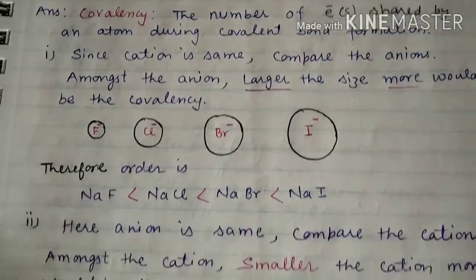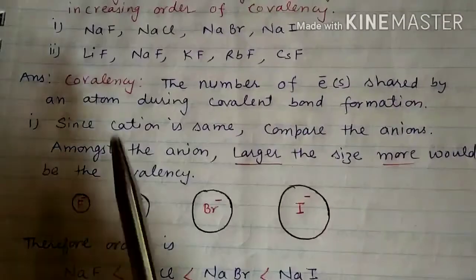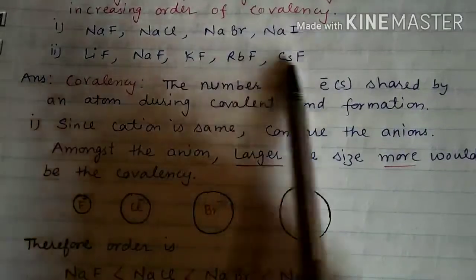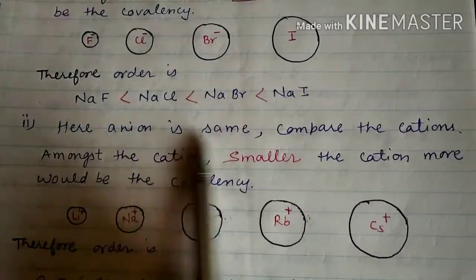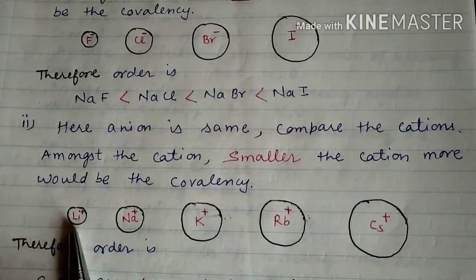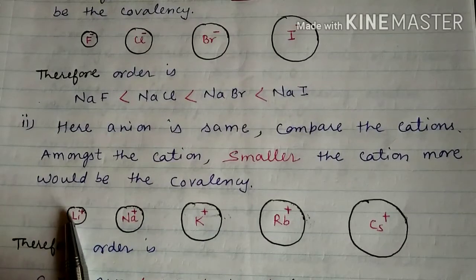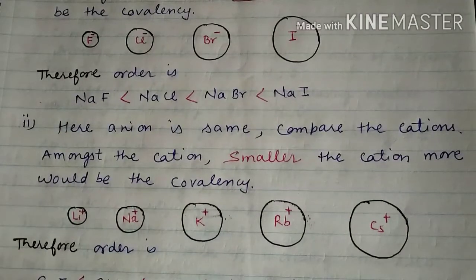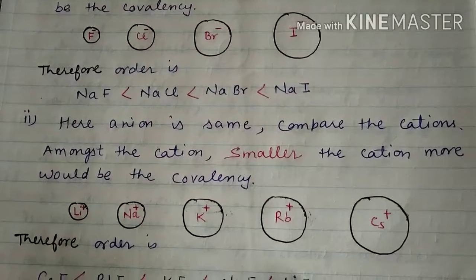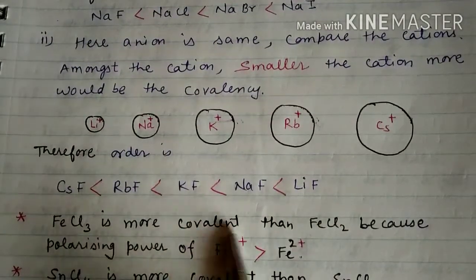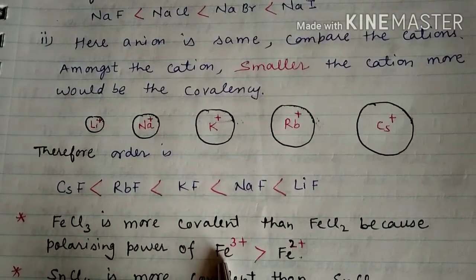In another example, for LiF, NaF, KF, RbF, and CsF, the anion F⁻ is the same, so we compare the cations. Smaller the cation, greater the covalency. Moving down the group, cation size increases. So Li⁺ has the smallest size and Cs⁺ the largest, meaning LiF has the highest covalency and CsF the lowest. Also, FeCl3 is more covalent than FeCl2 because higher charge on the cation leads to greater covalency.